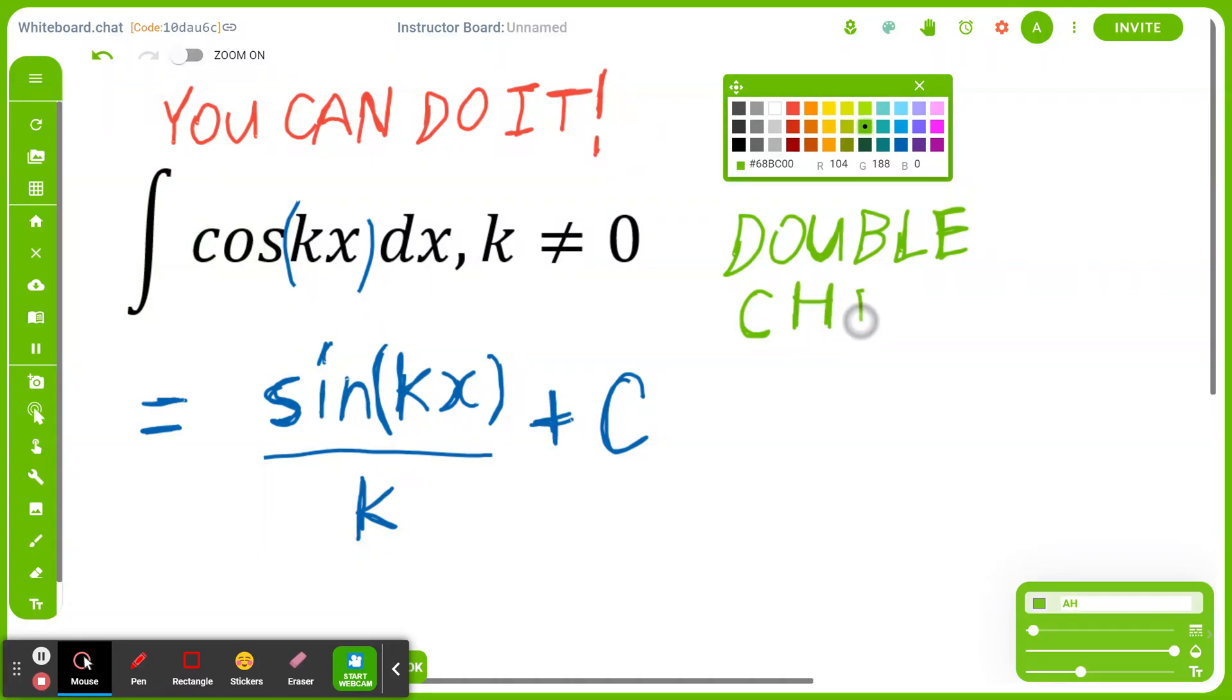what I'm going to show you is we're going to go the other way. Instead of finding the antiderivative, we're going to start with y = (1/k)sin(kx) + C and find the derivative.